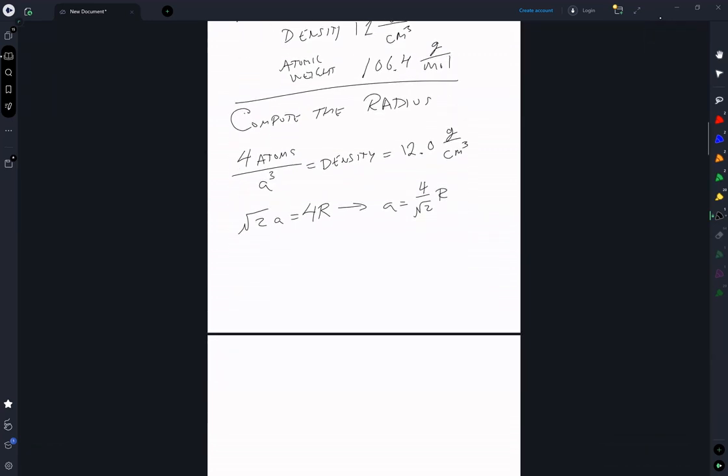The only other thing we need is Avogadro's number, and that is 6.02 times 10 to the 23rd atom per mole.